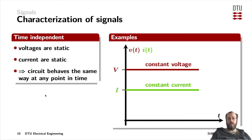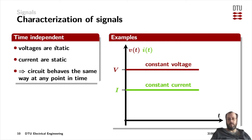Starting out with the dependency on time: signals can be time-independent and signals can be time-dependent. Time-independent signals are shown on this slide. In terms of electrical signals, we are often talking about voltages and currents, and time-independent means they are static — they are steady state, always the same value no matter which point in time we are looking at them.